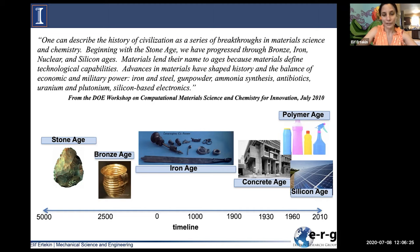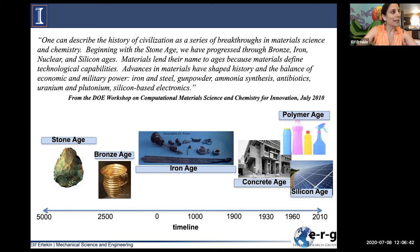Materials lend their name to ages because materials define technological capabilities. Advances in materials have shaped history and the balance of economic and military power — iron and steel, gunpowder, ammonia synthesis, antibiotics, uranium and plutonium, and silicon-based electronics. So much of what has happened in history is closely tied and really linked to developments in materials and the technologies that arose out of those.